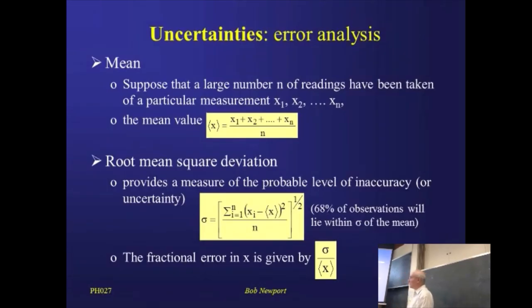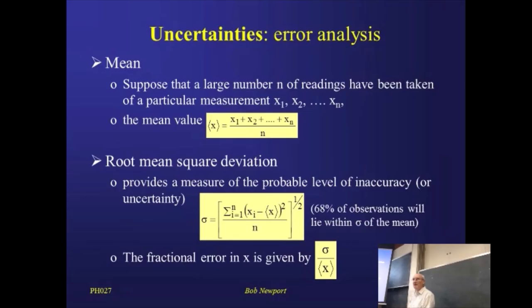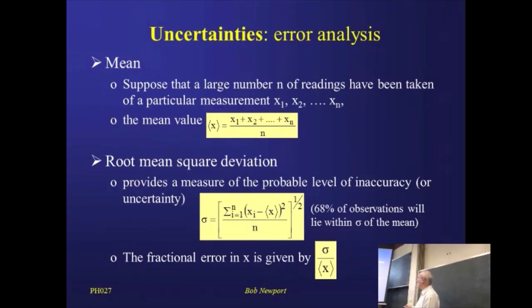The plus or minus that we're going to focus on — there are different ways of doing this, but this is the one we're going to use throughout this year and next. It's this thing called the root mean square deviation. Everything is in the label: it is the square root of the mean of the square deviation.